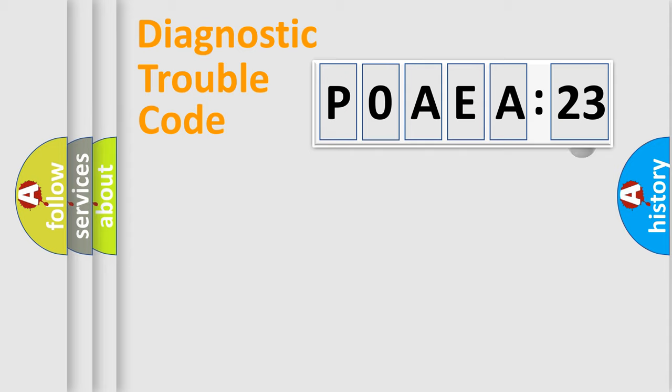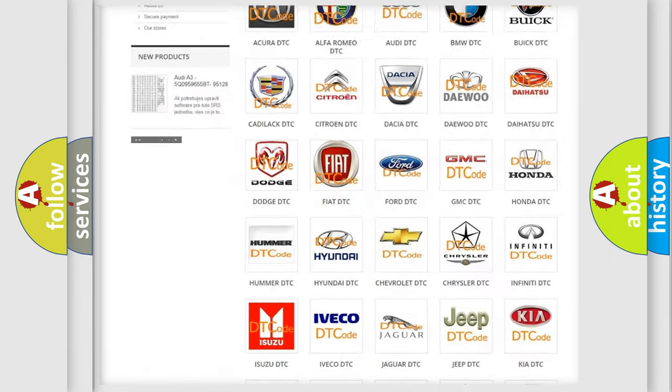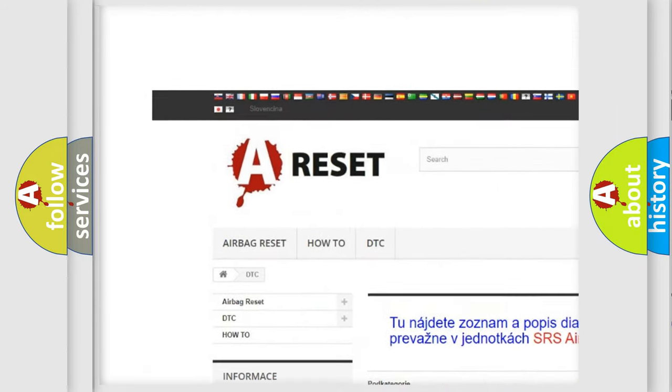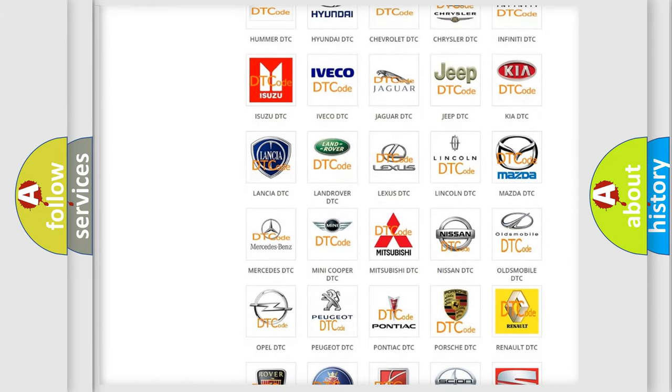Our website airbagreset.sk produces useful videos for you. You do not have to go through the OBD2 protocol anymore to know how to troubleshoot any car breakdown. You will find all the diagnostic codes that can be diagnosed in Nissan vehicles, and many other useful things. The following demonstration will help you look into the world of software for car control units.